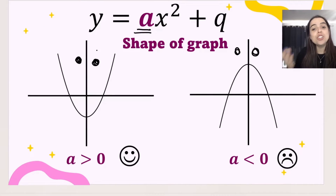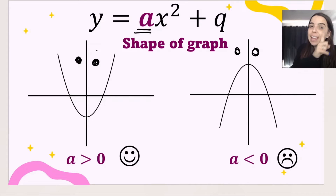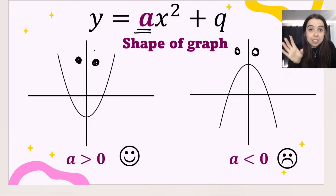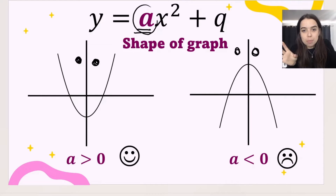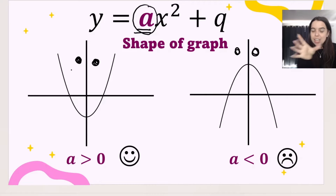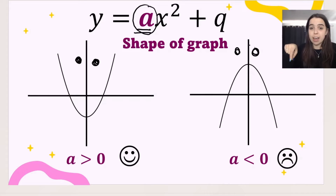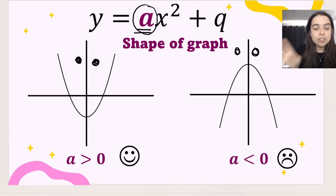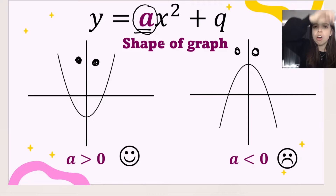What I mean by shape of the graph is: is the graph going to be a happy graph, a smiley face? If it is a happy face graph, our a is going to be a positive number, bigger than zero, and our graph is going to look like a U shape. If we've got a sad graph — a frown pointing downwards — we know that a is going to be negative, or less than zero. That's all you need to look at for the shape of the graph, so you know which way to draw it after you have your x and y intercepts.